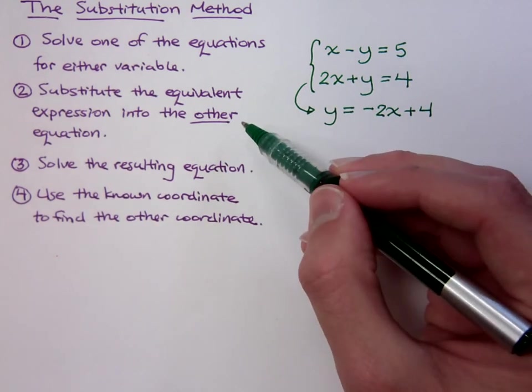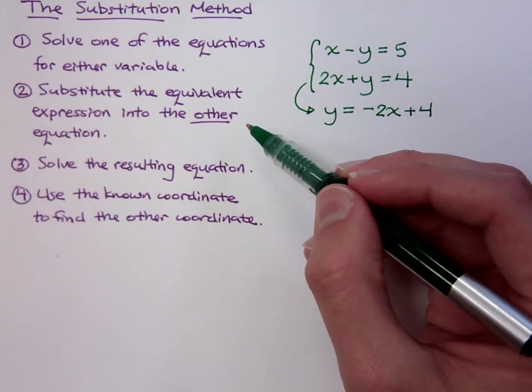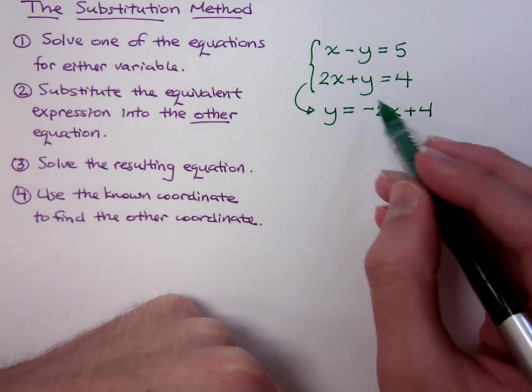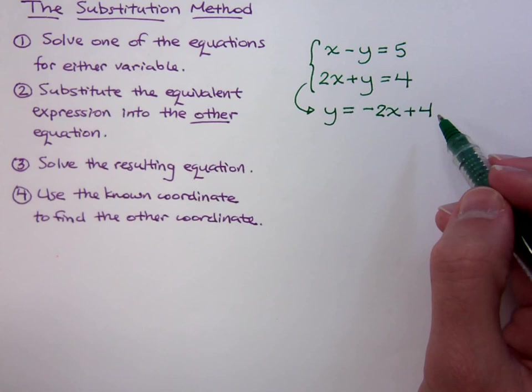Now look at the second step. It says you substitute the equivalent expression into the other equation. That means I'm going to take this guy and I'm going to plug it into the other one. And this is how you plug it in. We've done something like this already.